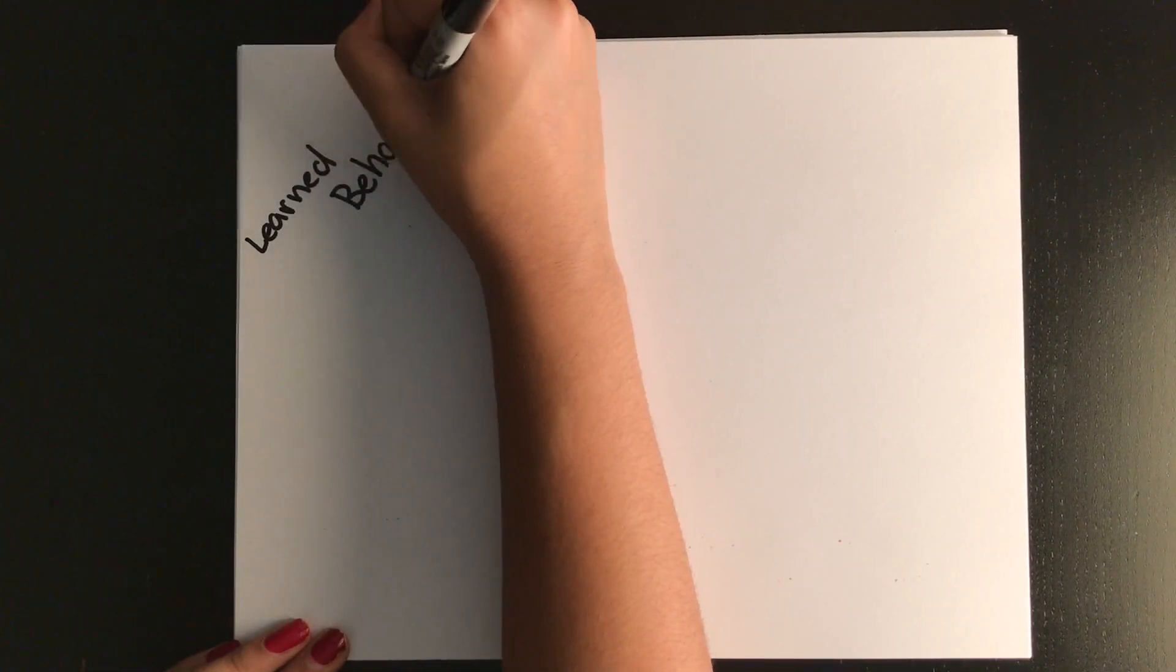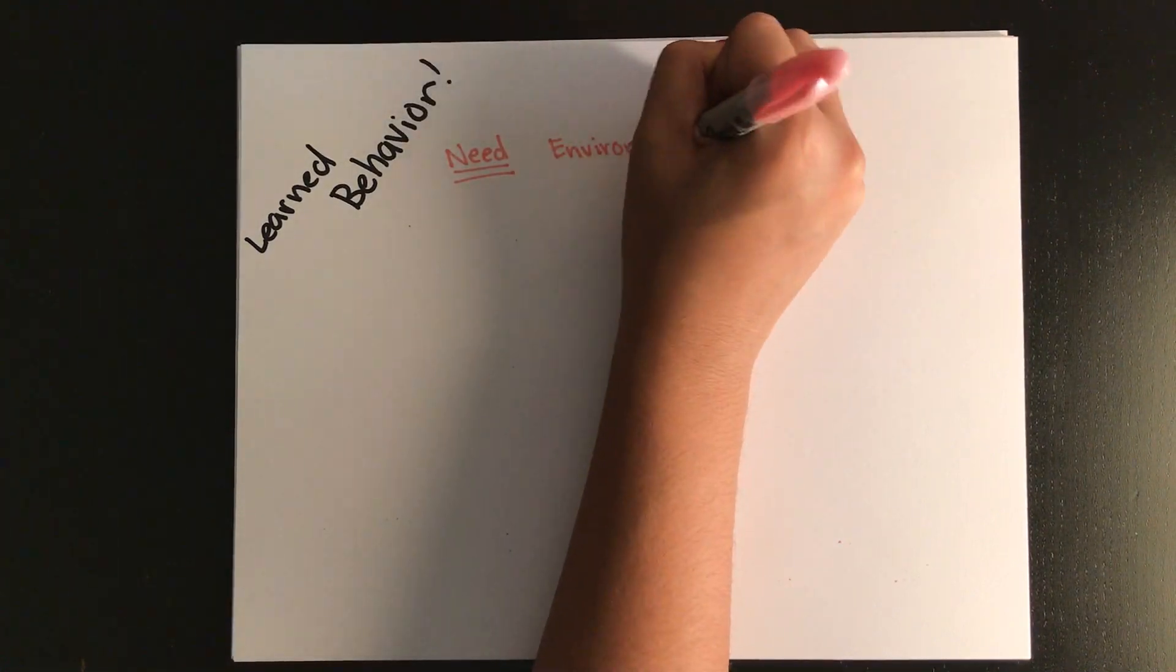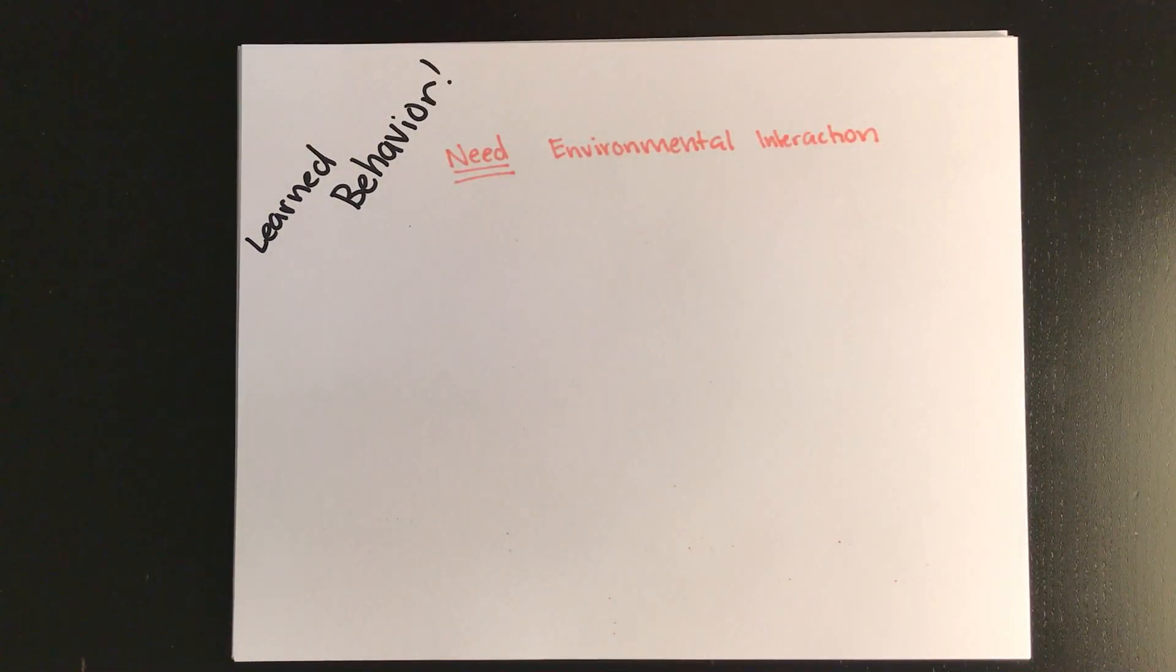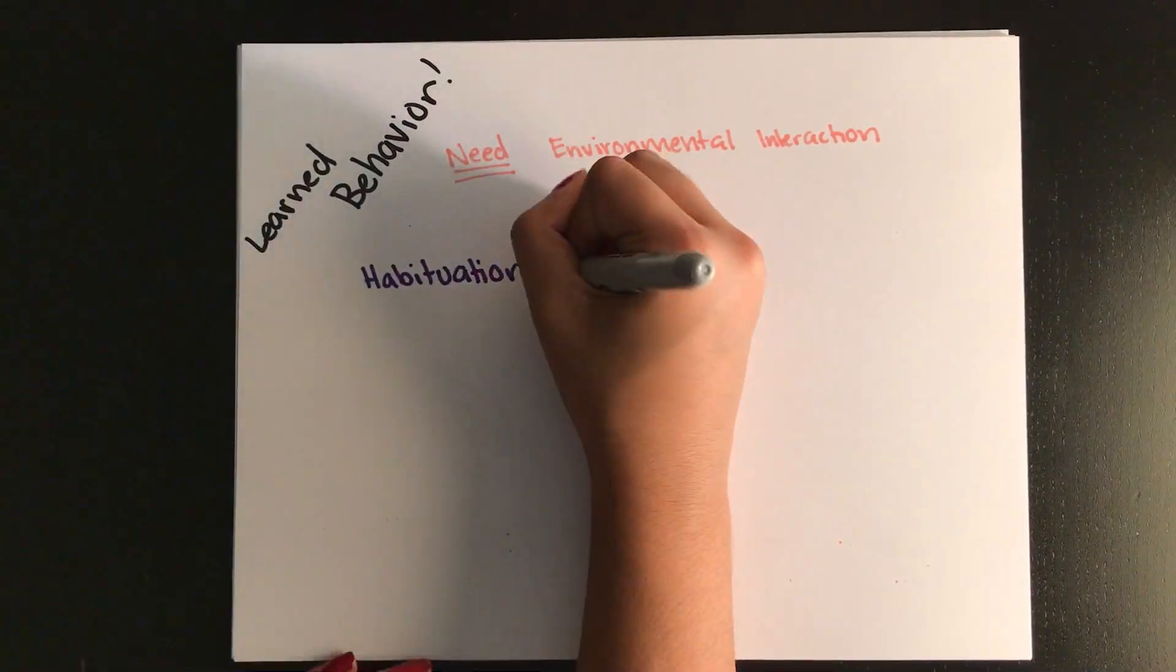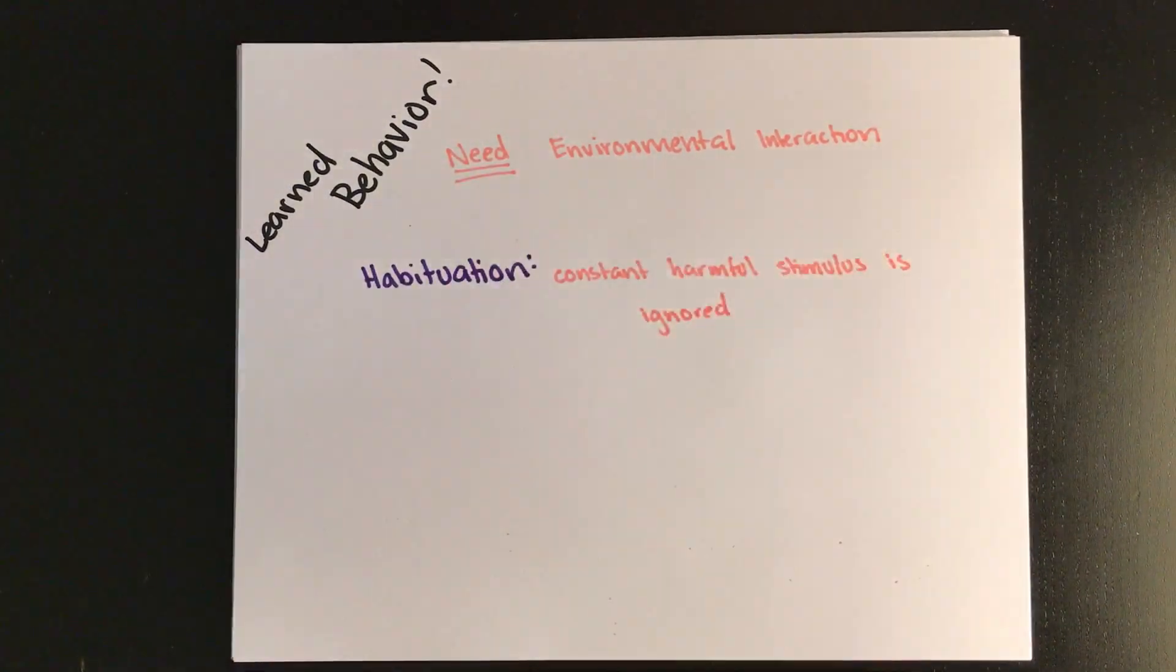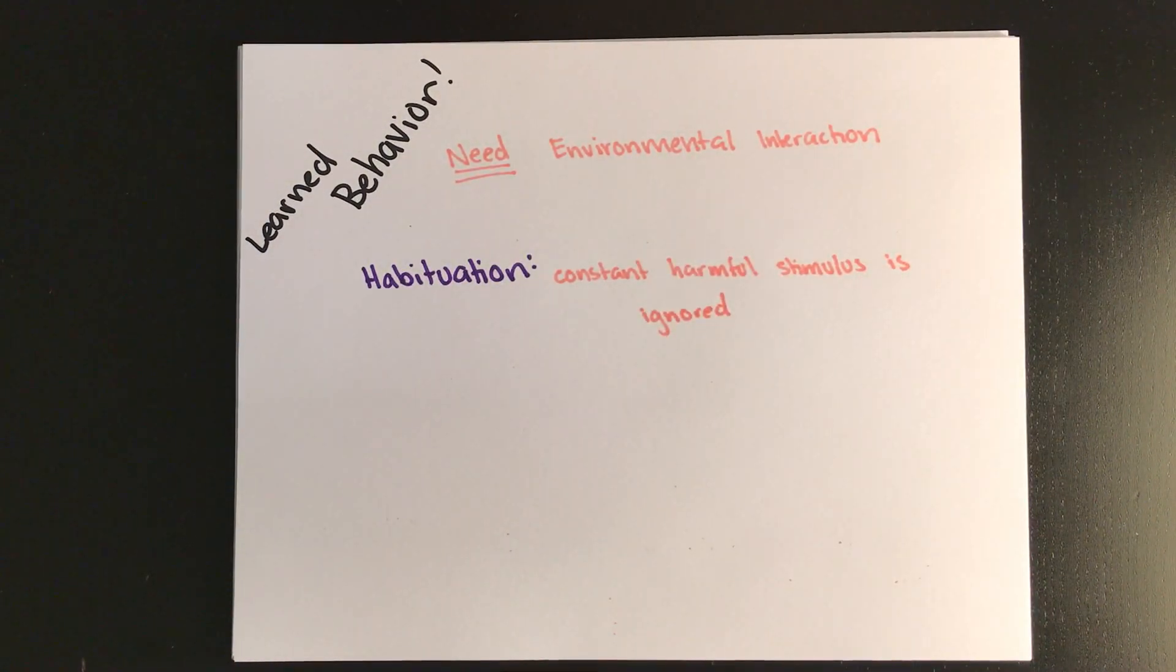A learned behavior is different. This requires environmental interaction or interaction with other organisms. One example of a learned behavior is habituation, which occurs when a harmful stimulus happens repeatedly and the organism just learns to ignore it. An example of this would be you poking your sibling enough times and eventually they just ignore you, or like your dog or an animal.